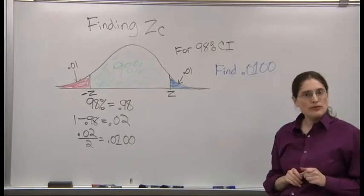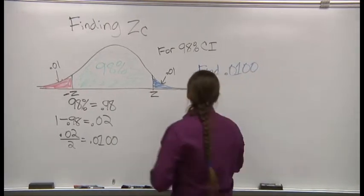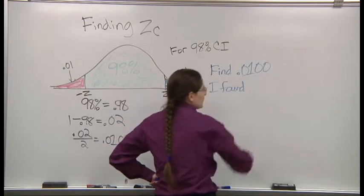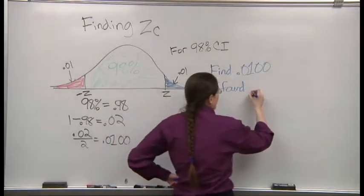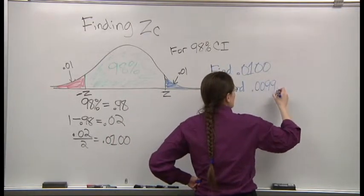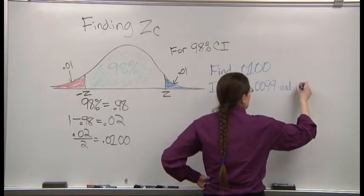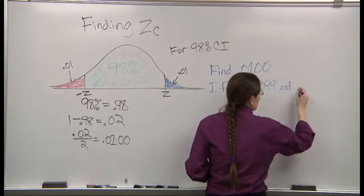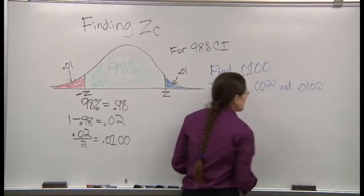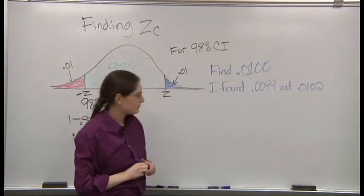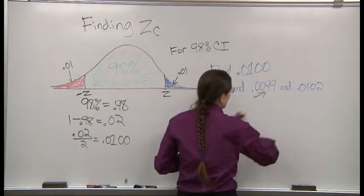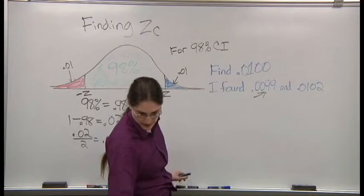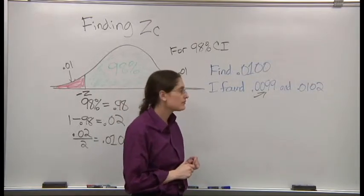As it happens, we don't find that exact number. We do find, well, what did you find? I found 0.0099 and 0.0102. Which one's closer? This one's closer to 0.01. And what is the associated z-score?